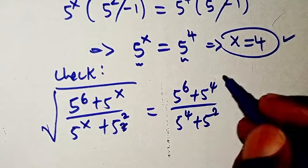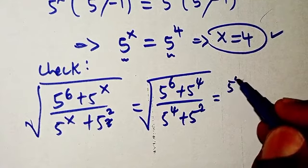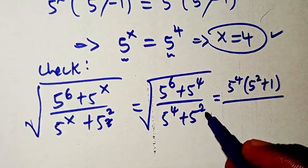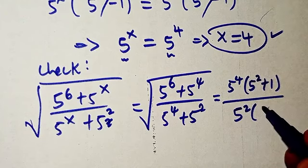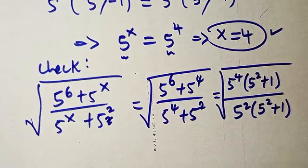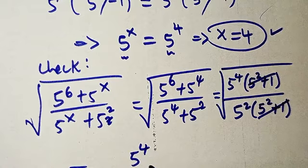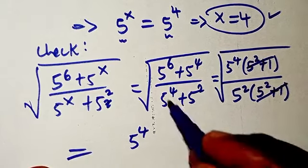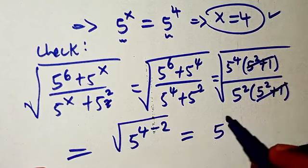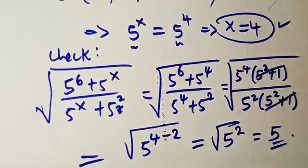We have the square root. From there, 5 to power 4 is common in the numerator: 5 to power 4 times (5 to power 2 plus 1). In the denominator, 5 to power 2 is common: 5 to power 2 times (5 to power 2 plus 1). The (5 squared plus 1) cancels. We have 5 to power 4 over 5 to power 2, which subtracting exponents gives 5 to power 2. Taking the square root cancels the square, giving us 5. So x equals 4 is confirmed as our solution.